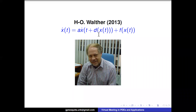However, for the linearized instability, Walther did not complete the proof because there were problems when dealing with this part. When dealing with neutral equations, the spectrum is very complicated — you can have infinitely many eigenvalues in your spectrum. Because of that, it is very hard to deal with this type of equation and prove the linearized instability. This problem was open, and then we decided to investigate it.